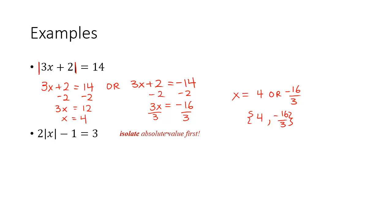The next one here, you want to isolate the absolute value first. So let's do that. Let's add 1. We get 2 absolute value x equals 4. Now divide by 2, so you have absolute value of x equals 2.